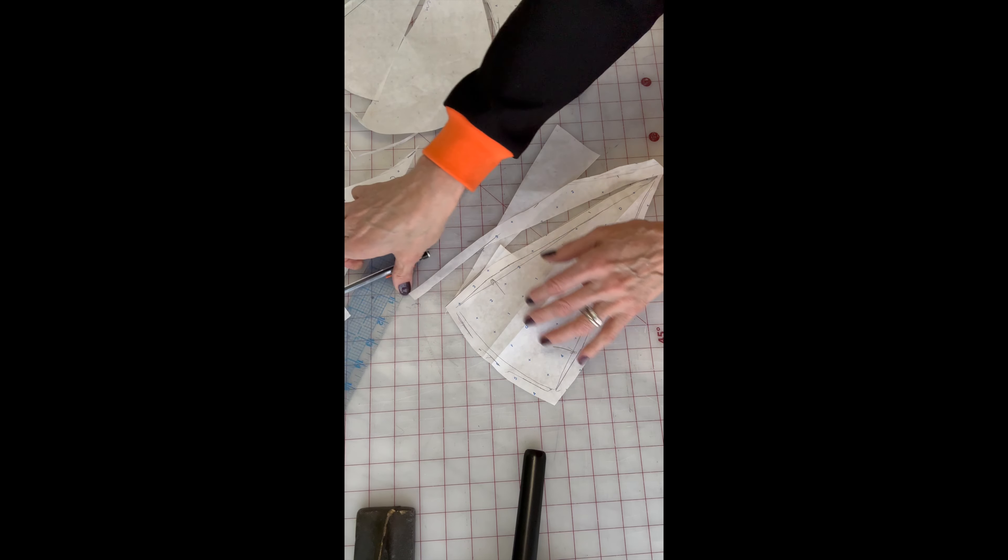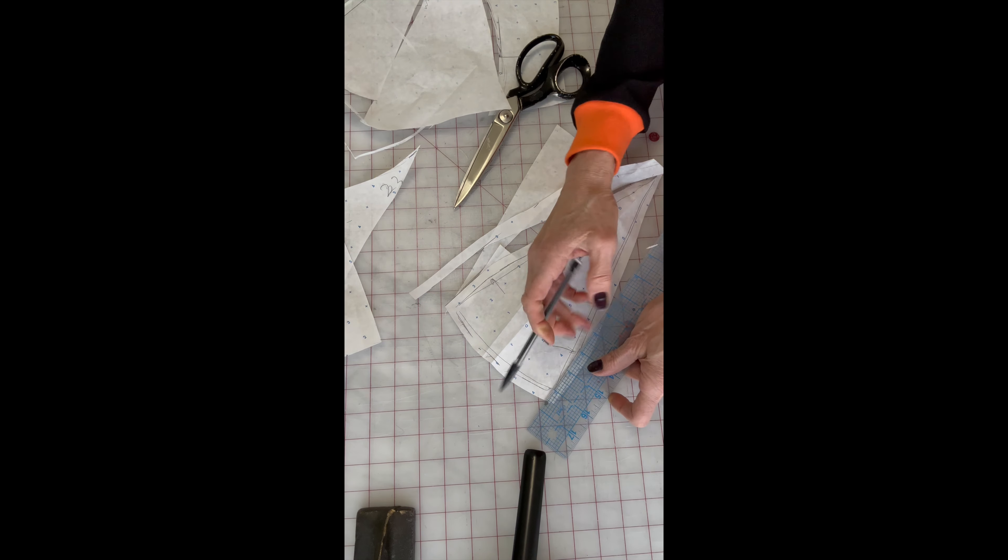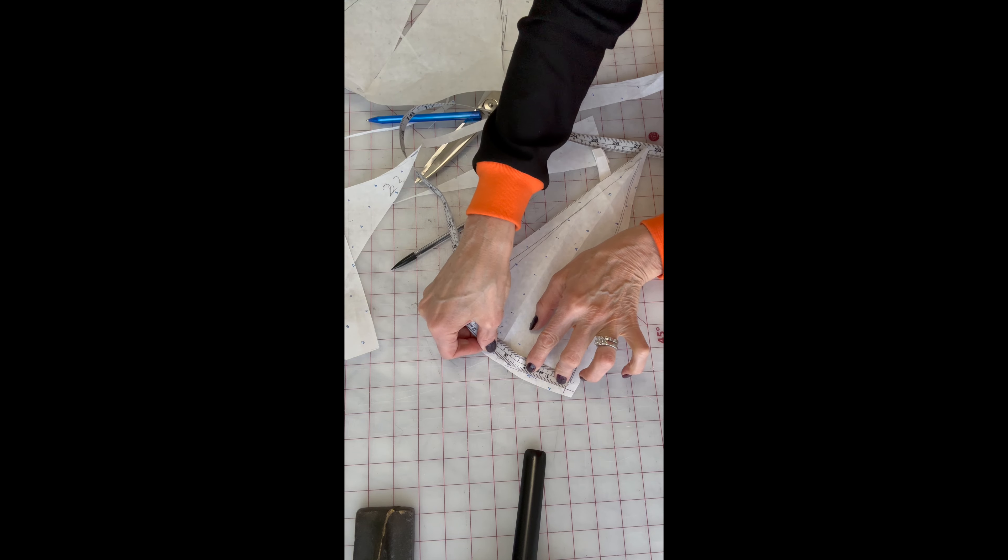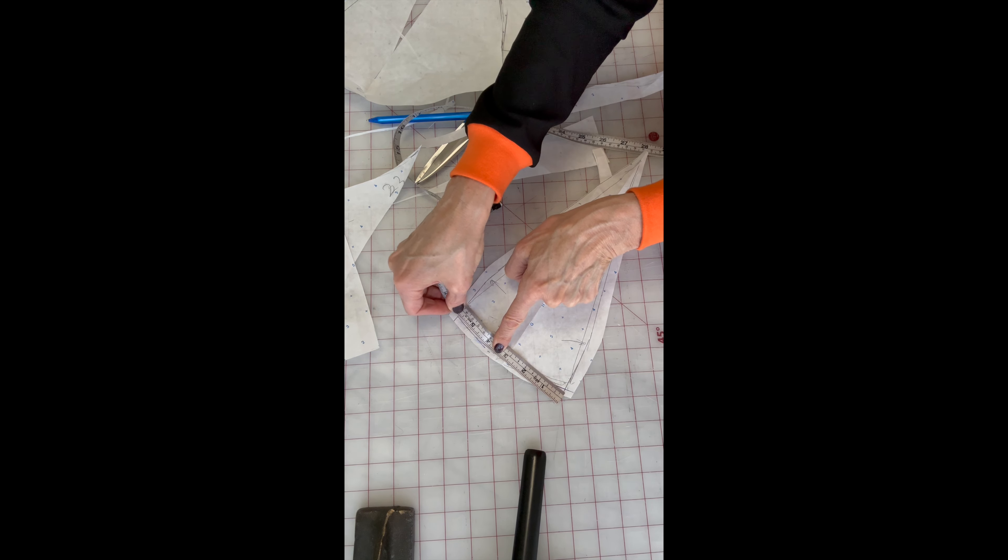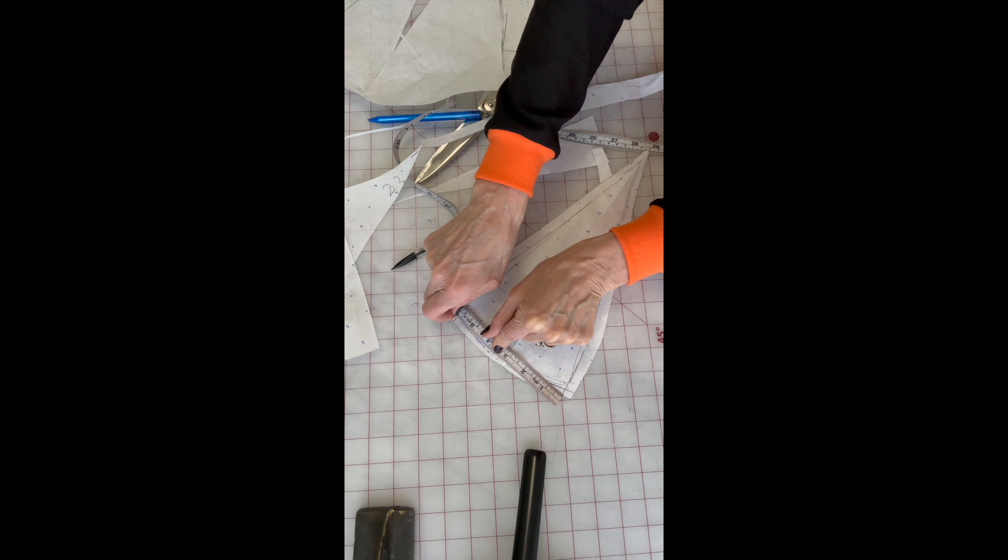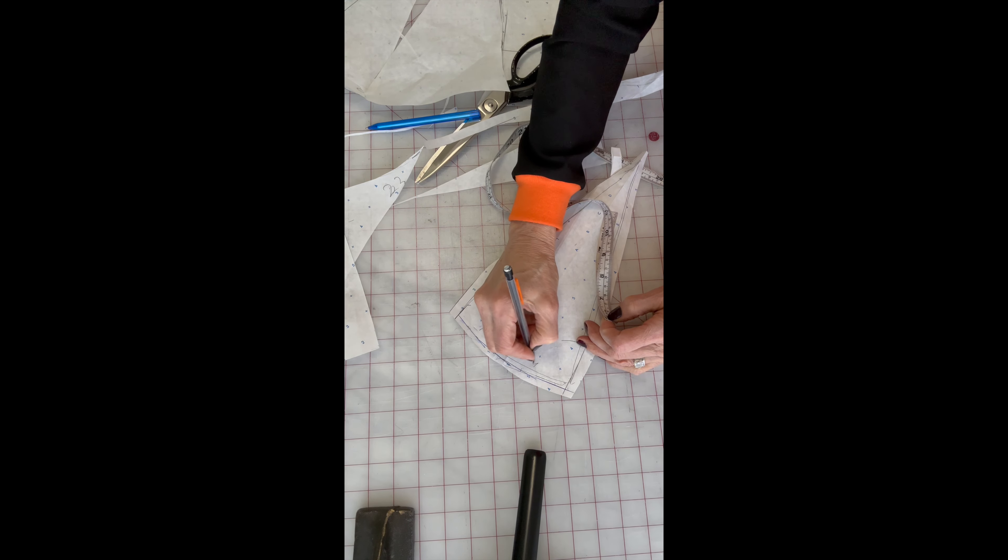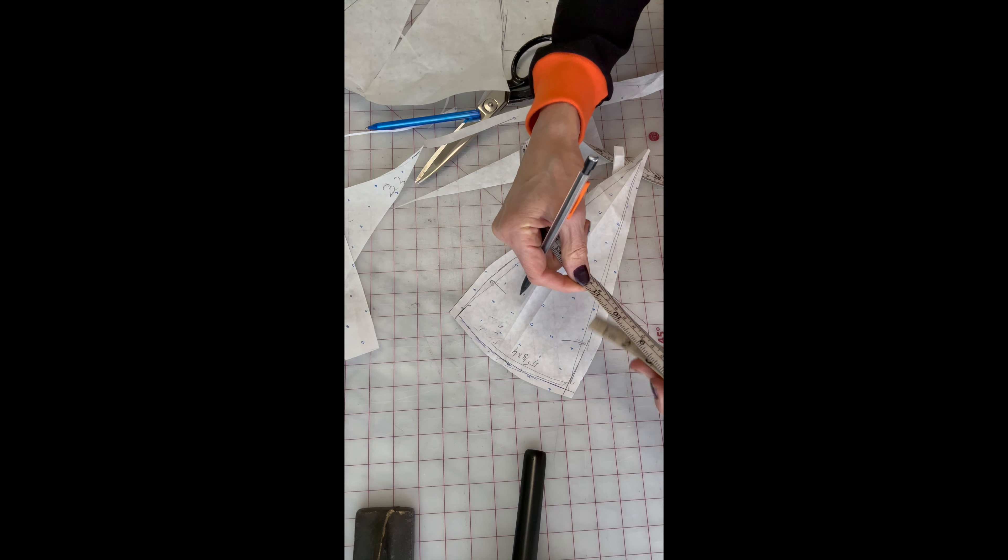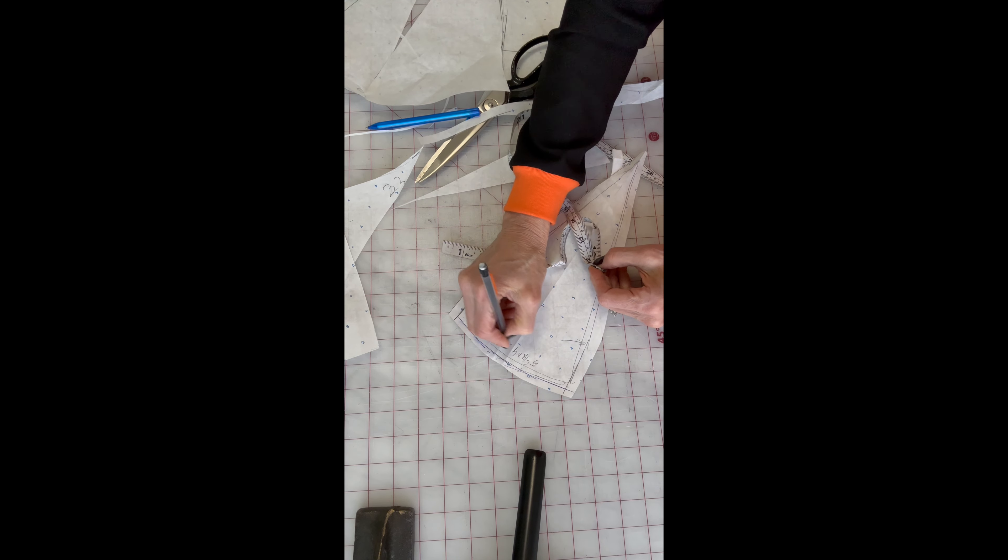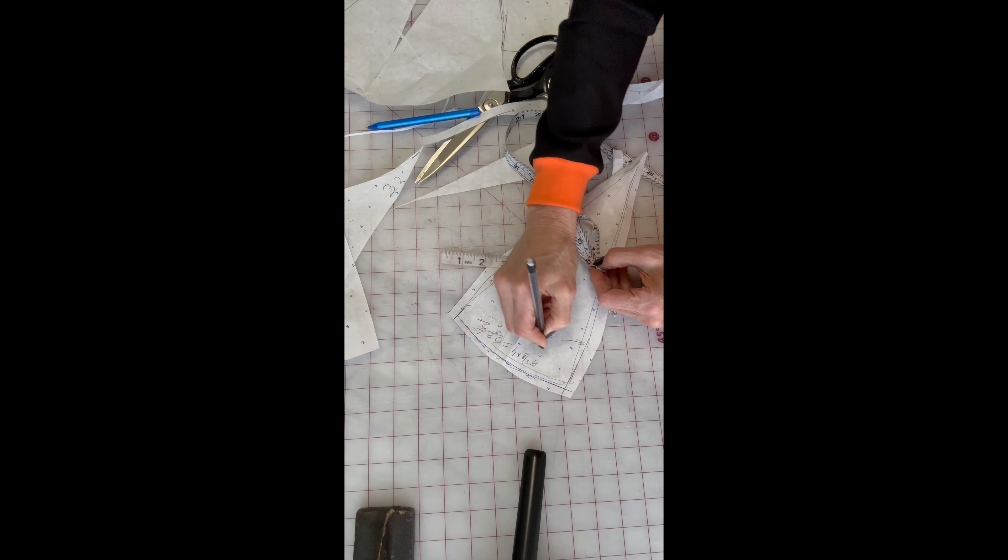So you can double check measurements. It's 5 and 5/8 inches. 5 and 5/8, times 4, is going to be 22 and a half. This is going to be perfect.